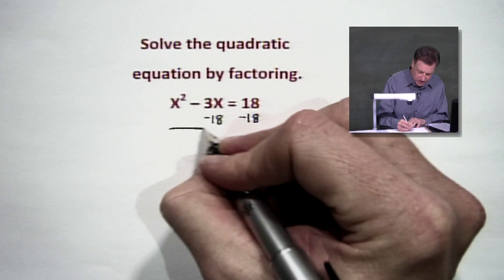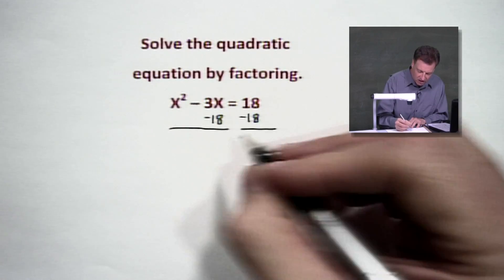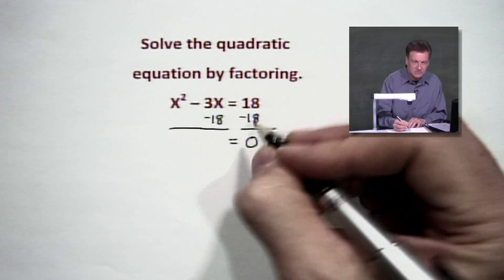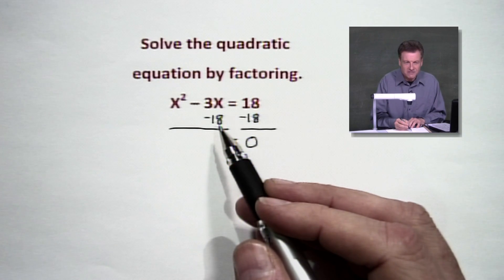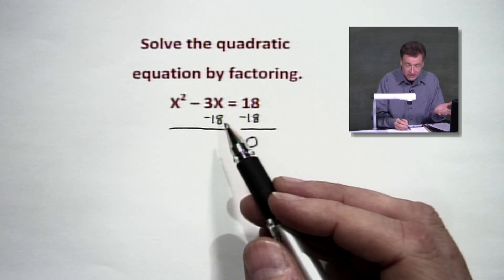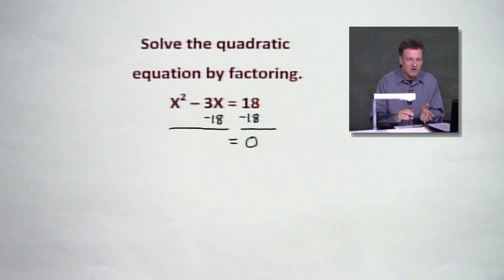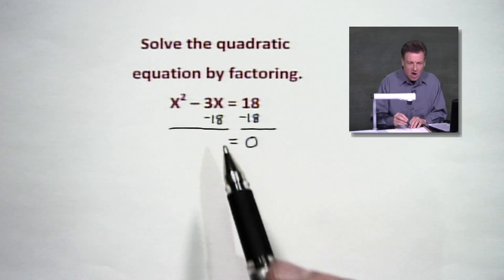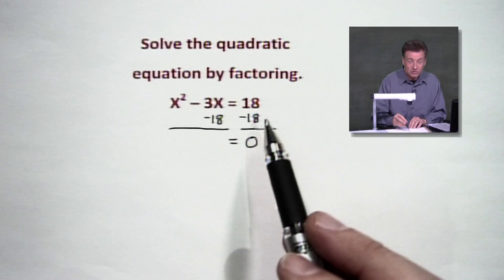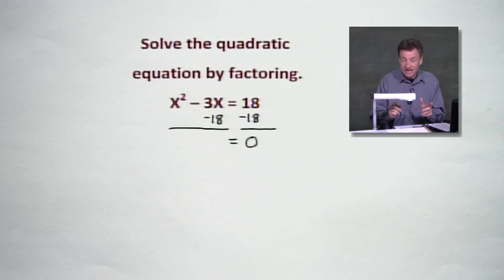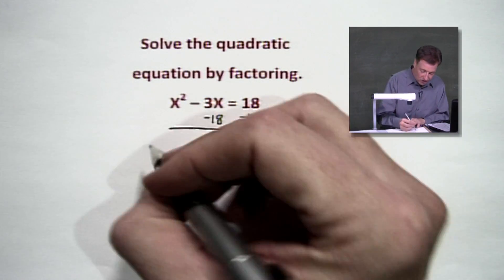Now I'm putting that 18 under 3x, but be careful, my friends. That gives us zero. Remember, the addition property of equality, in this case subtraction property of equality, says if you do it to the left, you've got to do it to the right or vice versa. So in this case, we're subtracting from both sides. So it is the subtraction property of equality. Now what does that do for us?